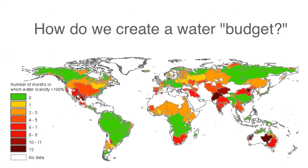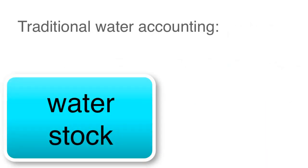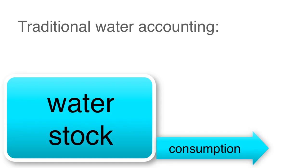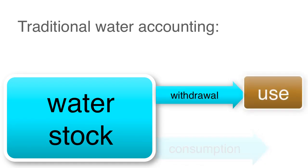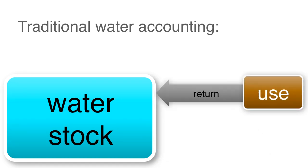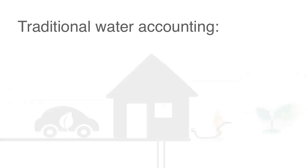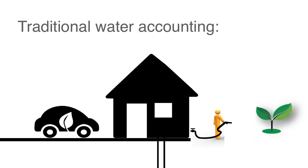How do we account for the stock of freshwater available in the amount that we need? The traditional method of measuring water has two categories of use: consumption or withdrawal. This image depicts the differences between the two accounting categories of water.